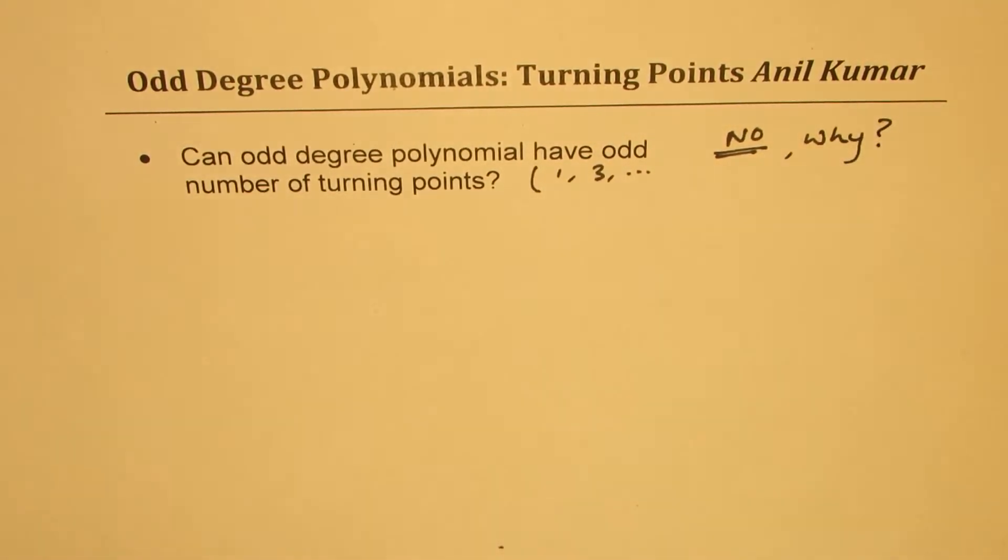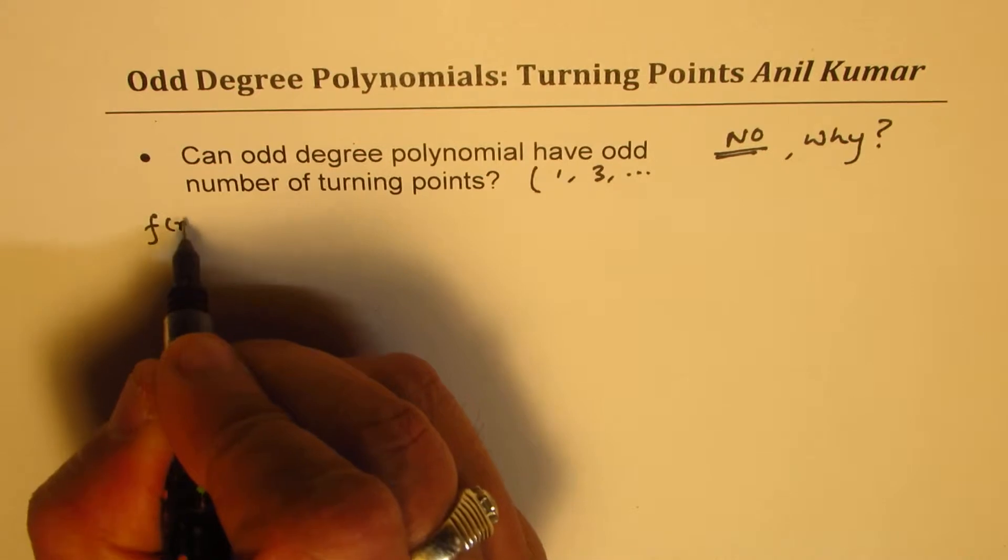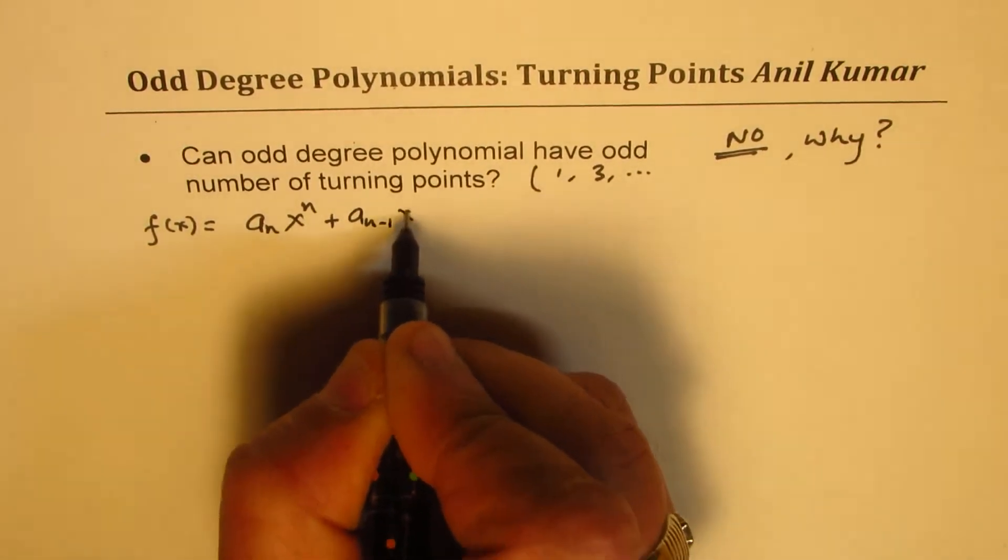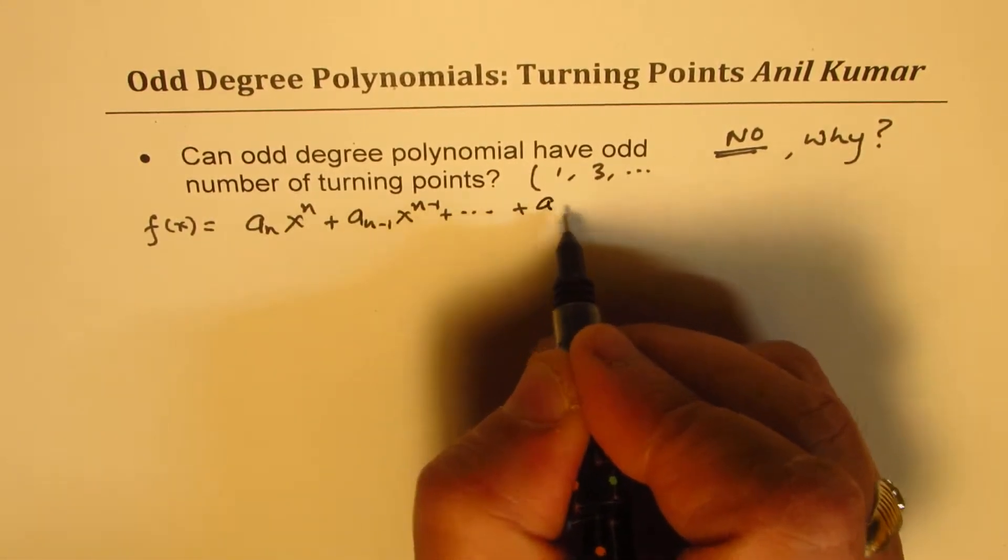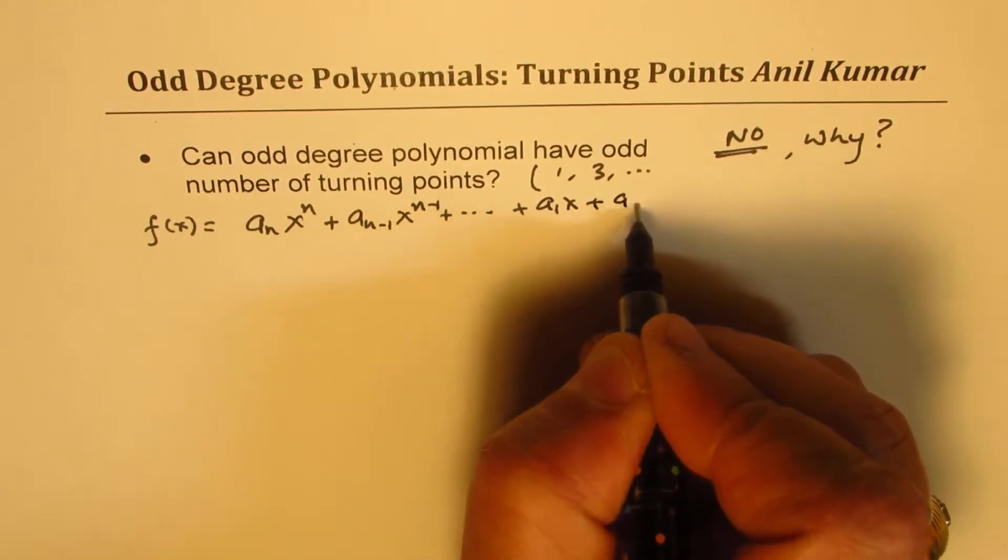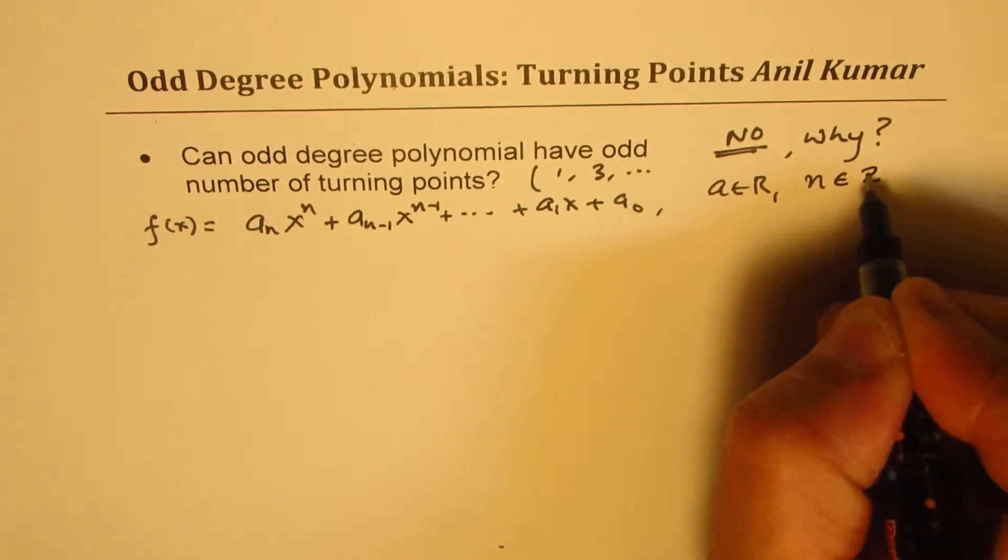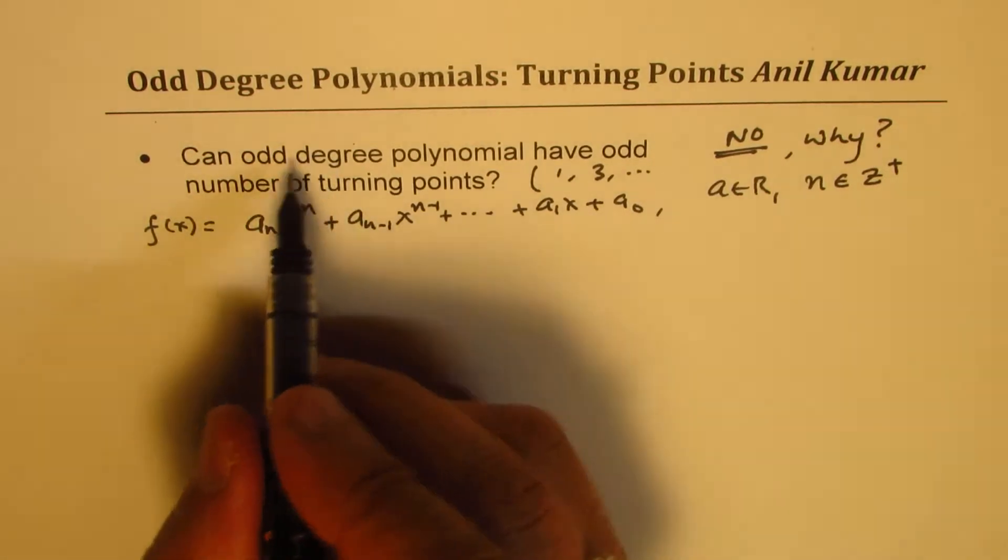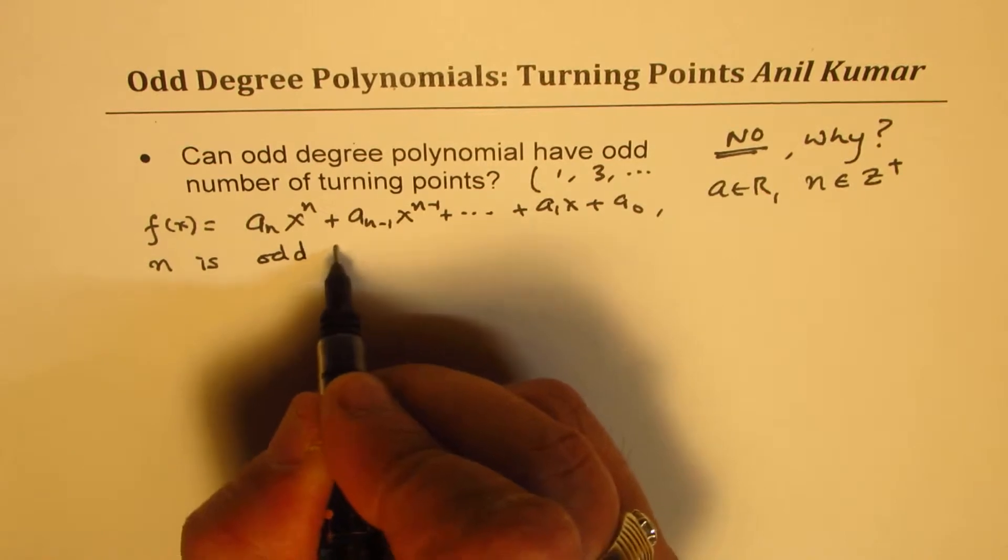That is what we need to understand in this particular video. So when we say odd degree polynomial, in that case, the polynomial which is normally written as An x to the power of n plus An minus 1 x to the power of n minus 1, and so on. We could have a constant term, right? So a1 x plus a0, where a belongs to real numbers and n belongs to integers which are non-negative.